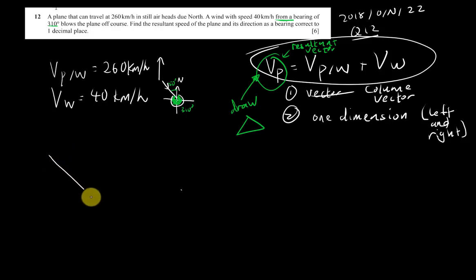We have the wind here. This is the wind. And then we have the plane relative to wind, so I will roughly draw like this. This is velocity of plane relative to wind. This is velocity of the wind. Of course, the last one, resultant vector, I will connect like this to make it a resultant vector.